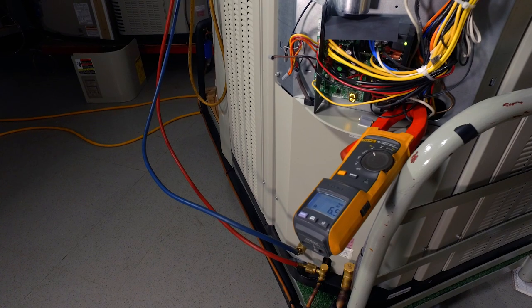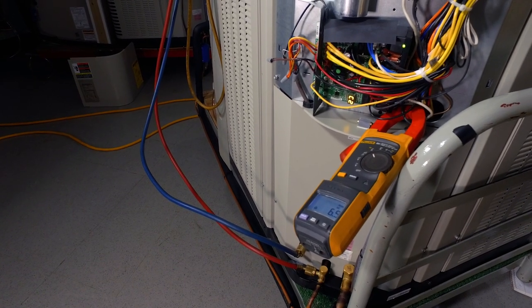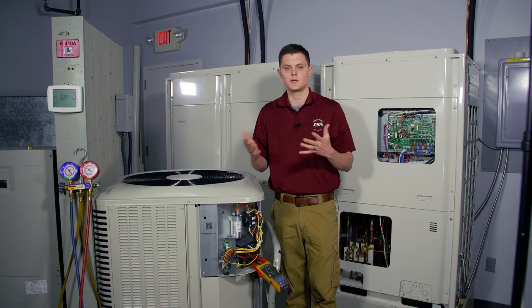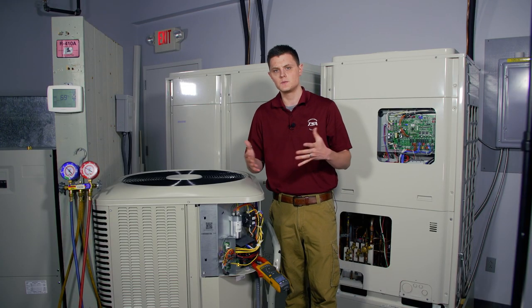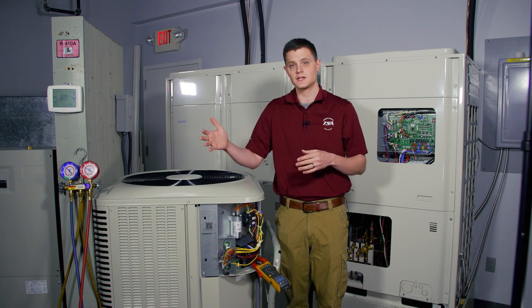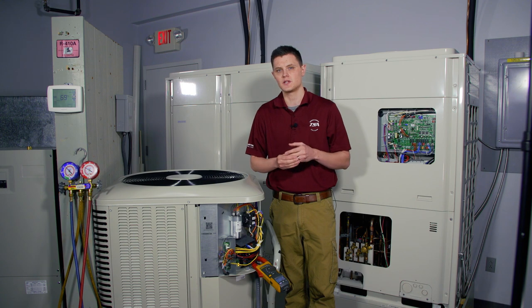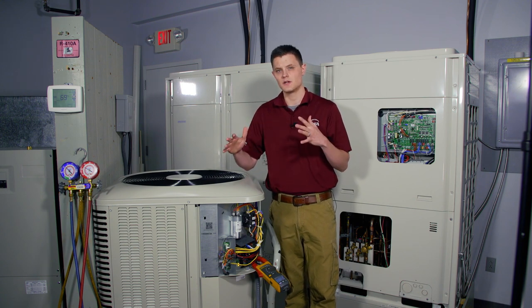The sure way or the electrical way to know with the clamp amp meter is to take an amp reading in first and in second stage, compare the two numbers. Generally speaking, when you go from second stage down to first stage, your amp draw is going to fall roughly about 30 percent between the two numbers.